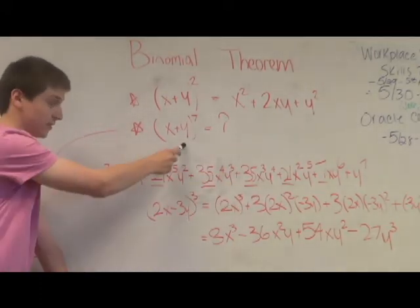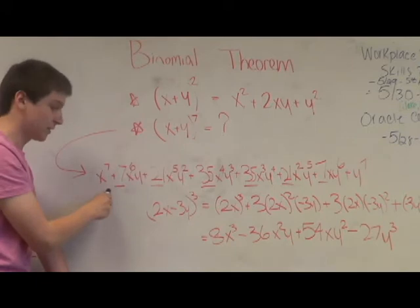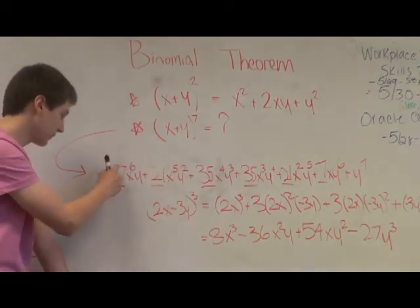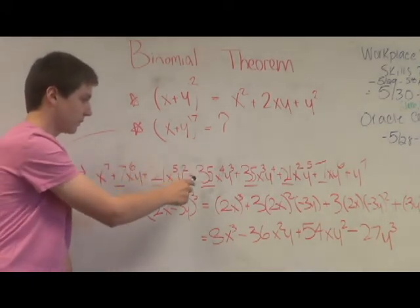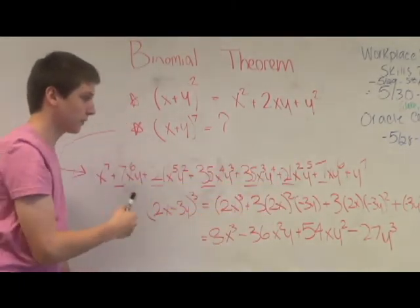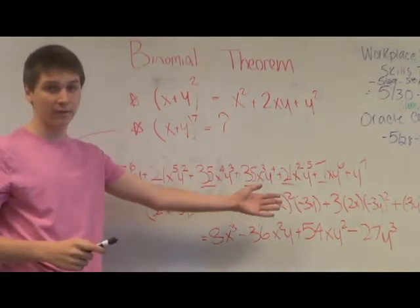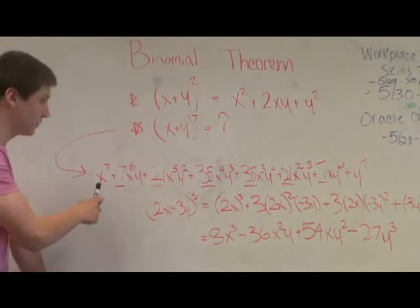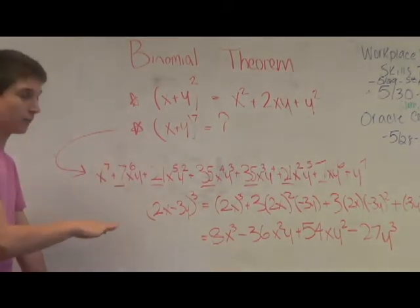Now in the case with the second term, the y will start at a degree of zero, so it's not here, then it keeps going up, and as it goes along it increases all the way down to y to the seventh down on the very end. This pattern can be used to expand any binomial that you want to any degree that you want.